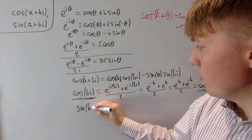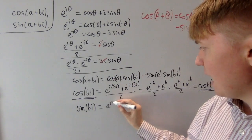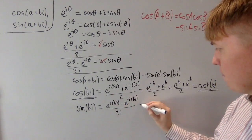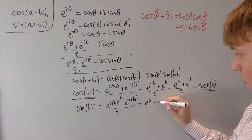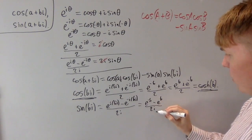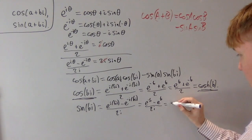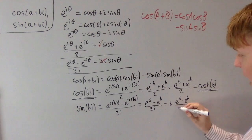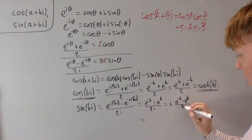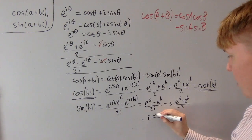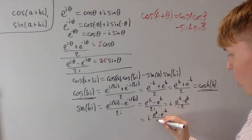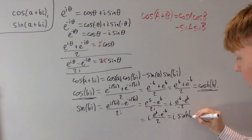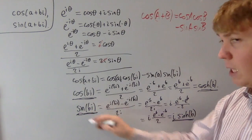We do the same for sine of bi. Substituting into the formula gives e to the i times bi minus e to the minus i times bi, all divided by two i, which gives e to the minus b minus e to the b over two i. Multiplying the top and bottom by i gives i times e to the minus b minus e to the b, all over minus two. Flipping signs in numerator and denominator gives i times e to the b minus e to the minus b over two, which is i times hyperbolic sine of b.